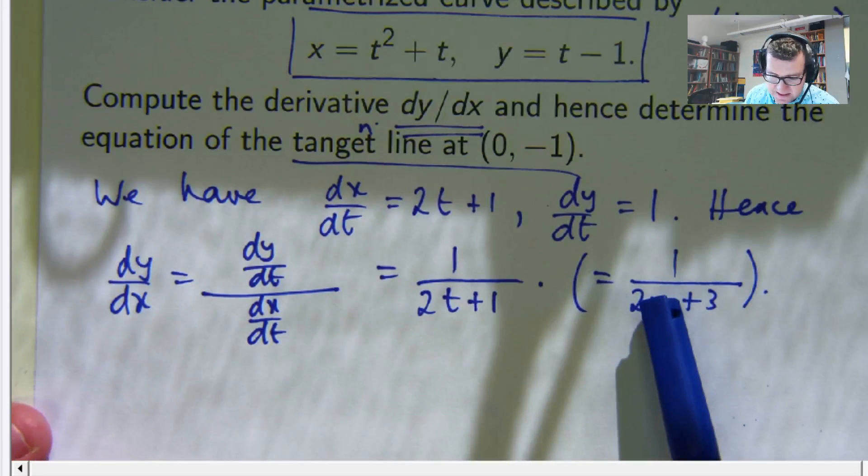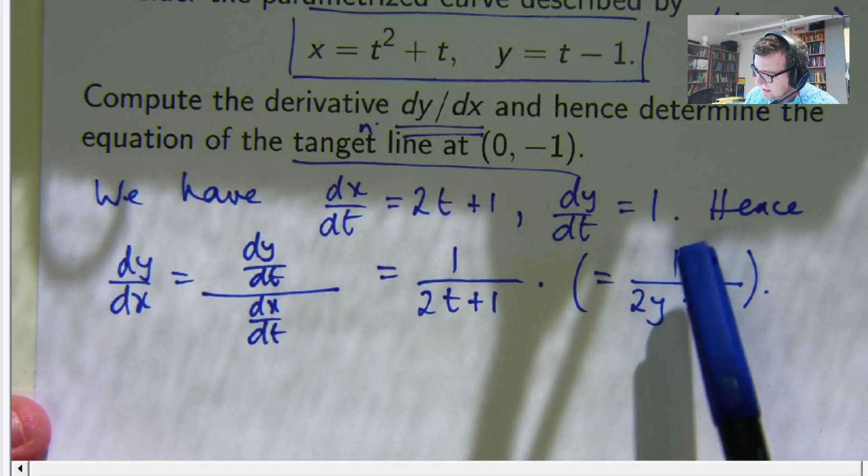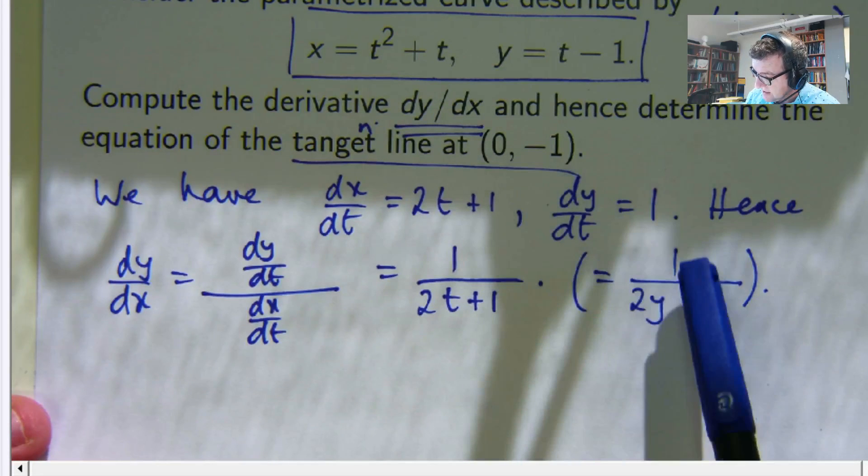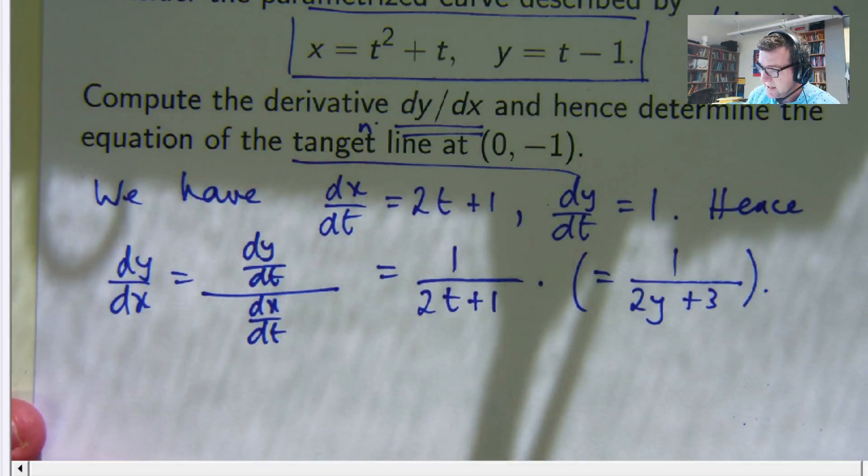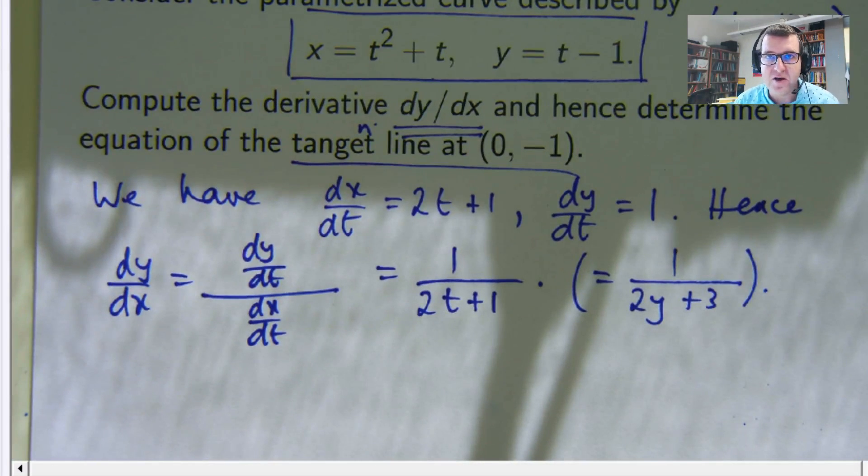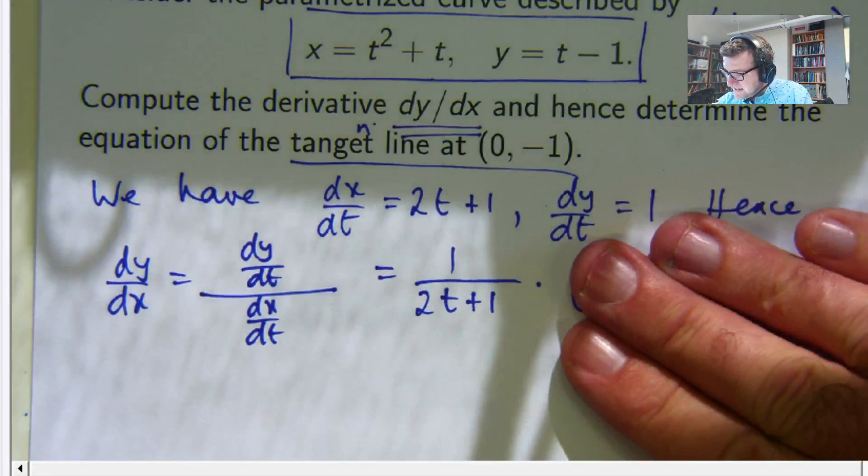Well, this is going to be 1. If I plug in y equals negative 1, I'm going to get 1 over negative 2 plus 3. So this is just 1. Now, if I didn't know, if I didn't actually put that down and I just used this, I would have to solve this by plugging in y equals 0.